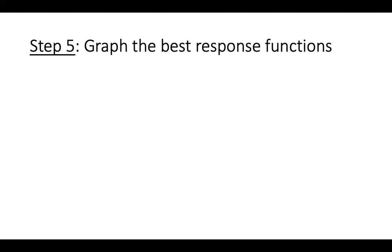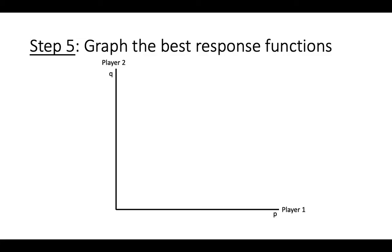We can now find the mixed strategy Nash Equilibrium of this game by graphing each player's best response functions. Each player's best response will be characterized in terms of their choices of p and q. For player 1, choosing a p of 0 corresponds to the pure strategy of always playing bottom, while choosing a p of 1 corresponds to the pure strategy of always playing top.